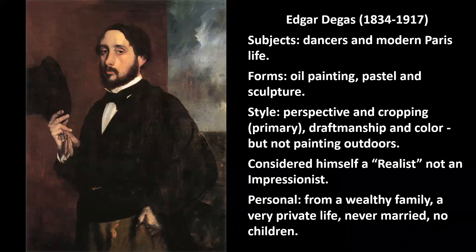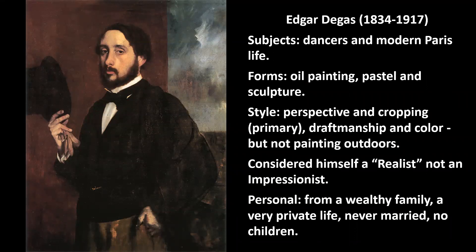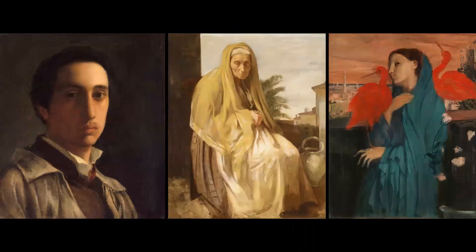Degas didn't paint outdoors — that just wasn't his cup of tea. He didn't consider himself an Impressionist; in fact he didn't even like that term. He considered himself a realist, because he was depicting urban city life of Paris as it really was. On a personal note, he came from a very wealthy family, had a very private life, was never married, and as far as we know never had any children.